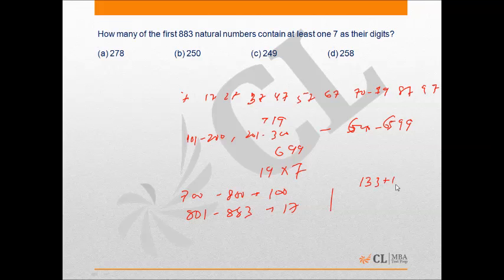133 plus 100 plus 17, which comes out to be 250. Therefore, option B is the correct answer.